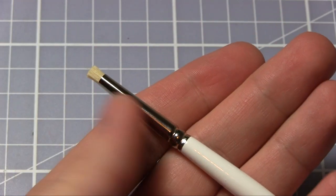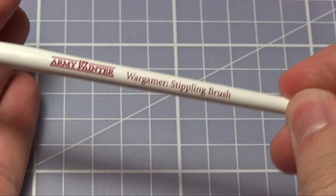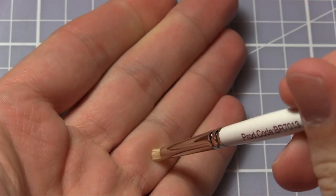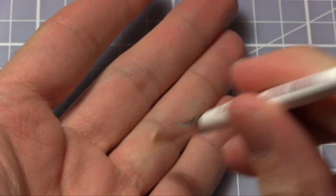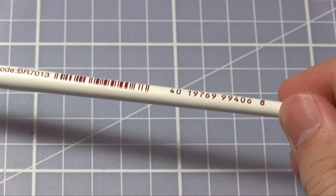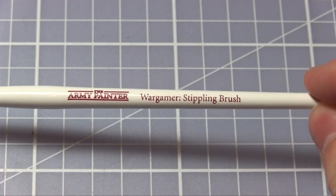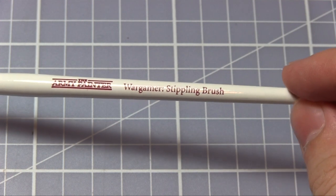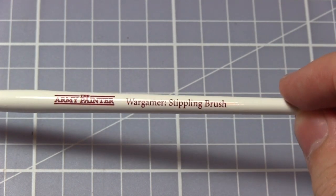This little stubby thing is the Wargamer Stippling Brush. This is excellent if you want to apply weathering to vehicles and infantry. You just dab it on like that and it creates a mottled effect. If you want to do some weathering on your vehicles or larger units such as Centaurions, then this is the brush to use.